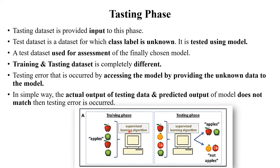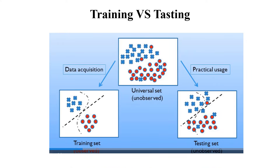To summarize: in the training phase we train the machine regarding particular images and labels. In the testing phase we test the machine using some images — if the image is of an apple it gives a proper result, or it provides the accuracy of the particular machine. This is the concept of training and testing phases.